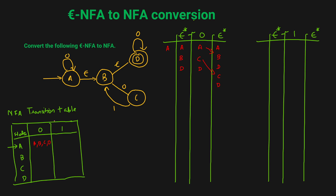For state A on input 1, the Epsilon closure is A, B, D — we can copy that from before. Now in state A, if you get input 1, there is nothing mentioned, so it's the empty set, phi. In state B, if you get input 1, nothing is mentioned, so again phi. In state D, if you get input 1, it's not mentioned, so again phi. Since there is no Epsilon closure for phi, the final answer for state A on input 1 is phi.